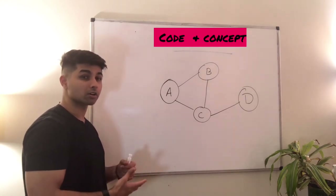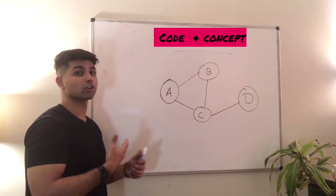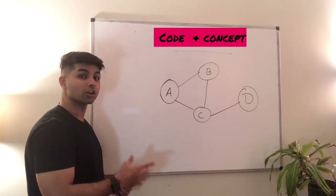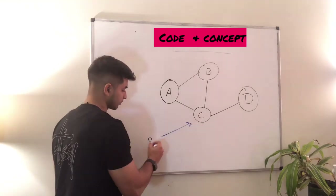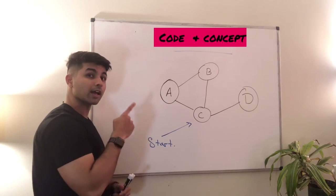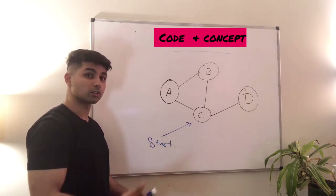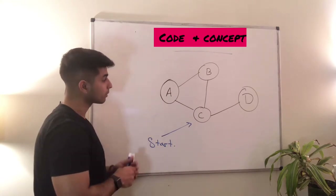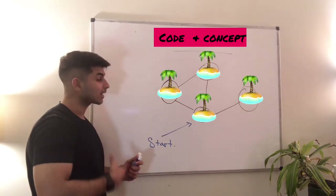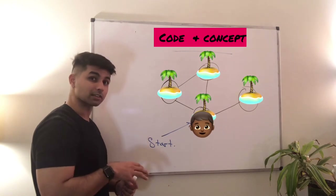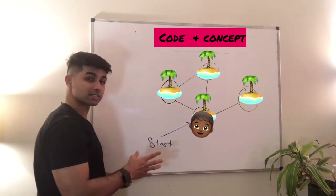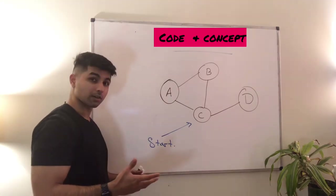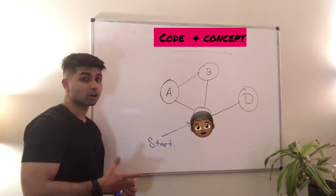Let's get into the third and final part: code plus concept. I'll show you a dry run of the DFS algorithm on this graph, then we'll code up the recursive method. The question is: given a start node, traverse this entire graph using DFS. We start at node C, and at the end we want to print out the list of nodes traversed in the order of traversal.